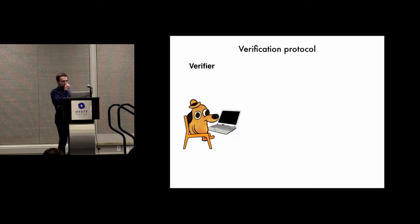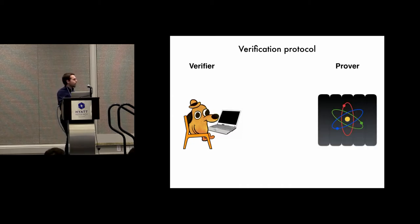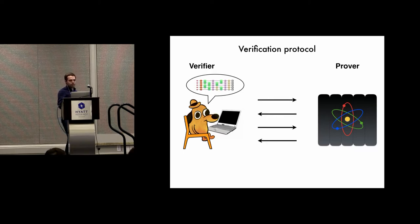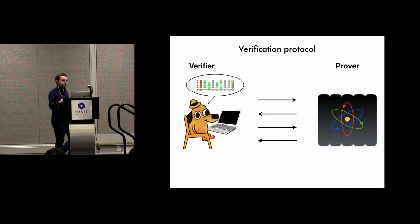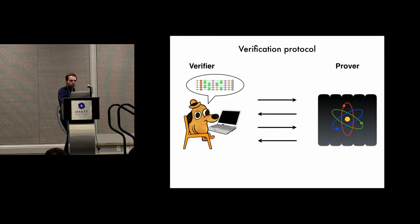The general idea is that we, as non-quantum beings, as classical users, are the verifiers, and the quantum computer is a prover. We take as input some quantum circuit that we want to delegate to this quantum computer, and we do this by interacting with the computer — by exchanging messages with it. At the end, we want to be able to verify the results produced by this quantum circuit. This is what we call a verification protocol for quantum computation.